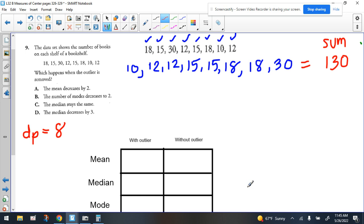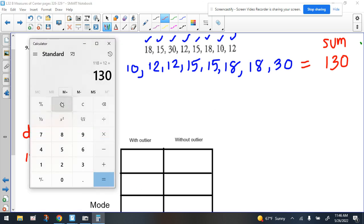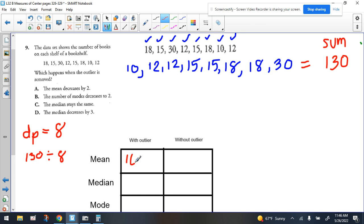All right, so to get the average, we have to take 130, which is the sum, and divide it by how many data points there are, which is eight. Whatever this is, we're going to put it in here. That's with the outlier in there. We're including the outlier, which in this case we're saying is 30. Let's take out our calculator. We already have 130 in there. We're going to divide that by eight, and we get this number. So we get 16 and 25 hundredths.